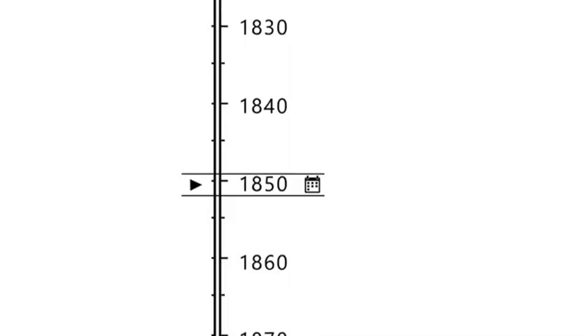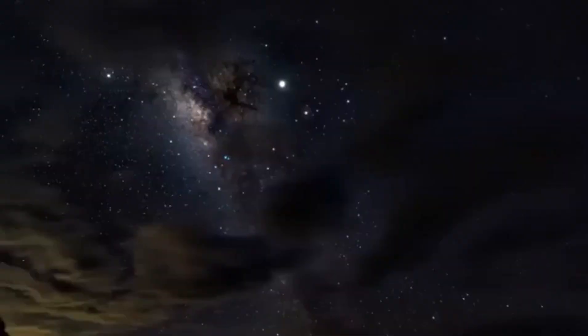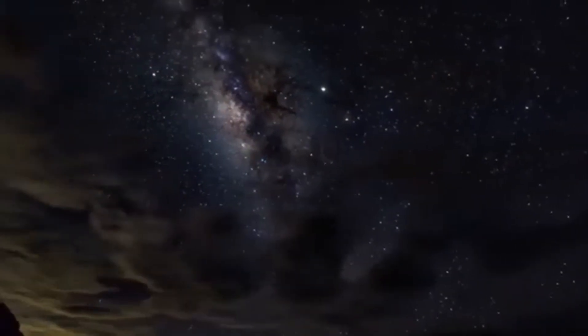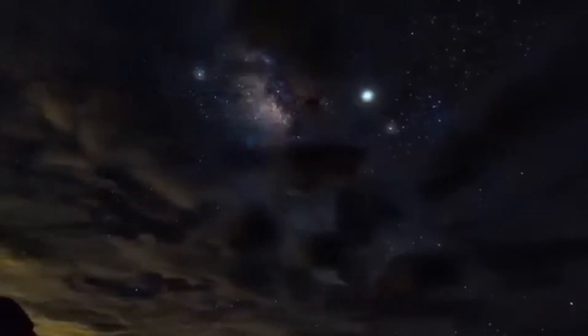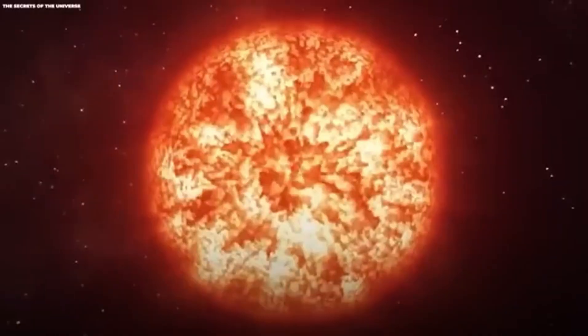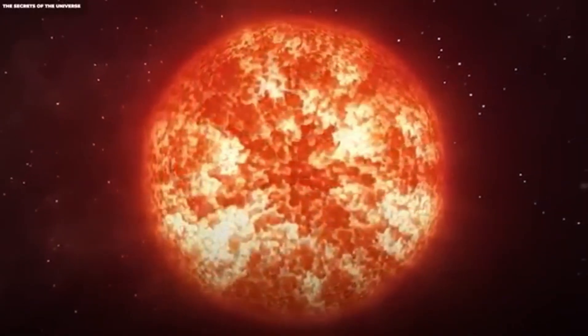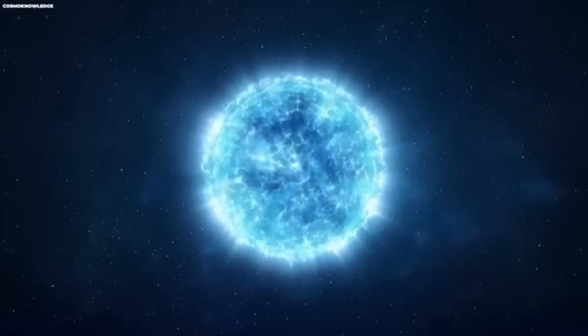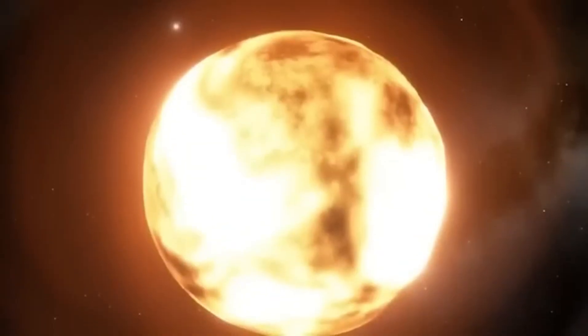Interestingly, historical records have noted that Betelgeuse's color has changed over time. Ancient Roman and Chinese texts suggest that about 2,000 years ago, Betelgeuse appeared yellow. By the 9th century, Arabic astronomers observed its reddish tint, indicating that the star has undergone significant changes over millennia.